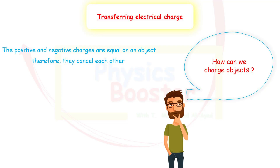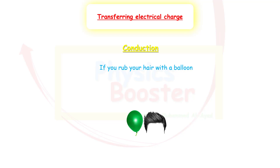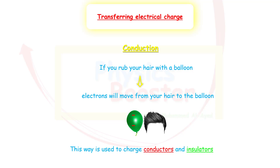There are two methods to charge objects. The first is called conduction — when you hear conduction, imagine two things touching each other. For example, if you rub your hair with a balloon, negative charges leave your hair and transfer to the balloon. So the balloon ends up with negative charges while your hair ends up with a positive charge. This method works for both conductors and insulators. There must be contact between the two objects to charge them using conduction.